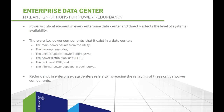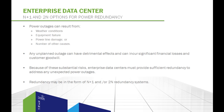When enterprise data center providers refer to redundancy, they're typically talking about how they increase the reliability of these critical power components — in other words, how much backup power will the data center offer customers during an outage? Power outages can result from weather, equipment failure, power line damage, or a number of other causes. Any unplanned outage can have a detrimental effect on operations. At a minimum, a company can incur significant financial losses and loss of customer goodwill if they are unable to conduct business for any length of time. Because of these substantial risks, enterprise data centers must provide sufficient redundancy to address any unexpected power outages.